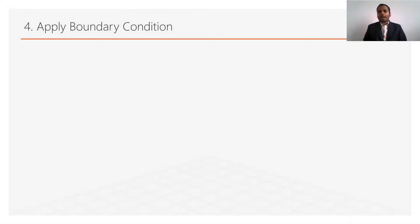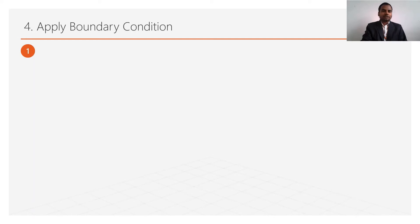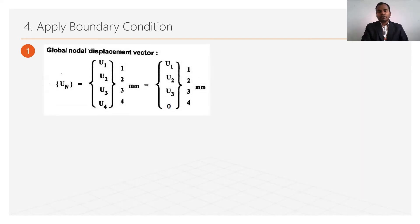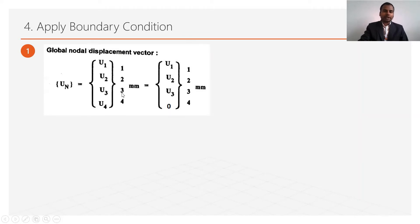Step number 4 is to apply boundary conditions. This means identifying where the body is fixed and where forces are applied. First, we write the global nodal displacement vector. There are 4 nodes, so there are 4 displacements: u1 at node 1, u2 at node 2, u3 at node 3, and u4 at node 4.